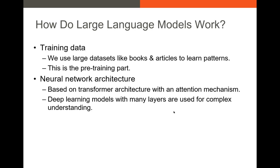Large language models are kind of like natural language processing models. You take a training dataset — books, magazine articles, web pages — use it to learn patterns, run it through your machine learning algorithm with many different hidden layers, and use that to predict whatever you want. There are a lot of different large language models out there. I mentioned transformer architecture. These models can have different numbers of layers or different numbers of nodes in each layer.